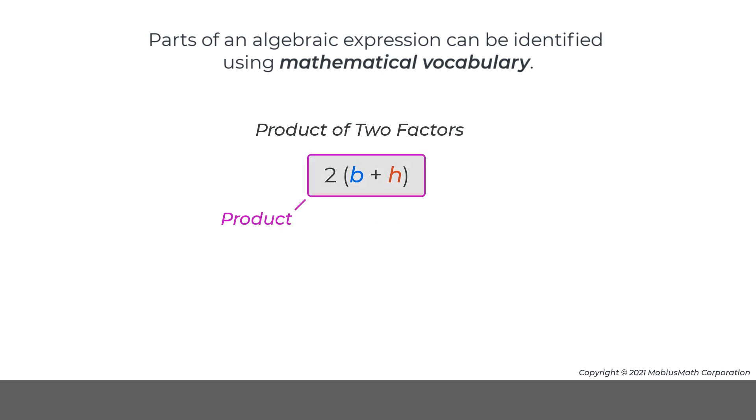A product is the result of multiplying two or more factors. Factors are the part of a product that are multiplied.